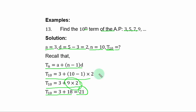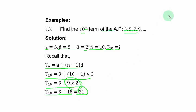This means: starting from the first few terms and continuing to add the common difference, by the 10th term you arrive at 21. That is the meaning of the Nth term formula.